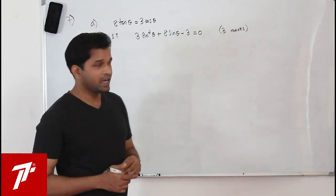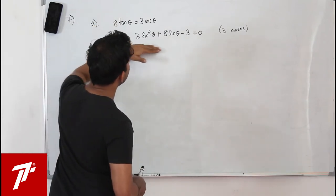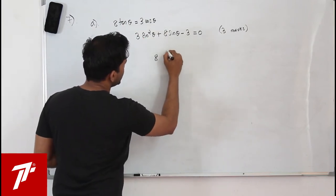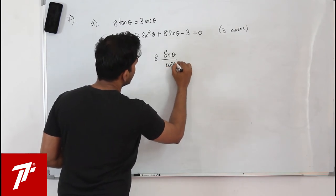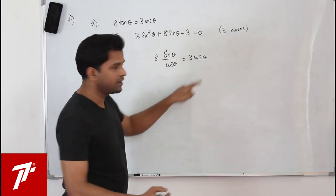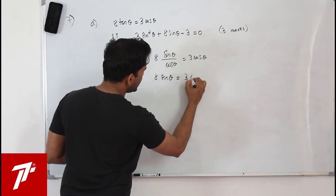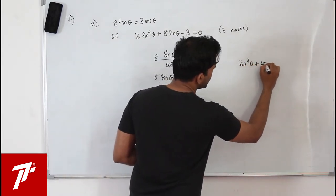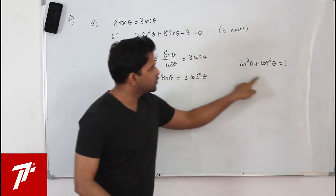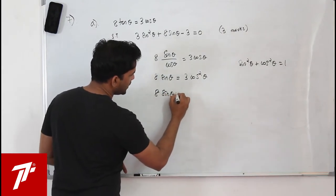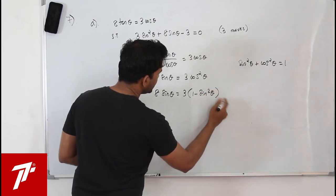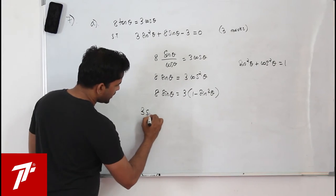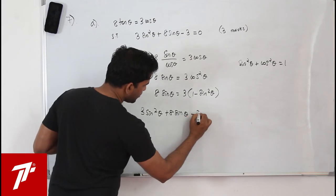We use trigonometric identities. The target equation has no cos θ or tan θ, so we change everything to sin θ. Write 8 tan θ as 8 sin θ / cos θ = 3 cos θ. Multiply both sides by cos θ to get 8 sin θ = 3 cos² θ.